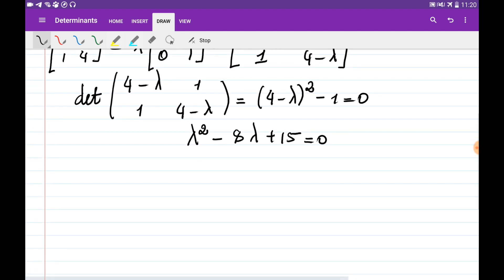Note that we can factorize this quadratic equation: (lambda minus 3) multiplied by (lambda minus 5) equals zero. This means the first eigenvalue of this matrix is 3, and the second eigenvalue is 5.